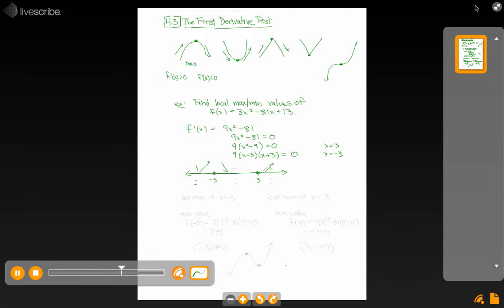In between if I pick a number like 0 I have a negative times a positive which is a negative. It's decreasing in between. Which means if it increases and decreases I have a local max at x equals minus 3. And we'll find the y value in a second.